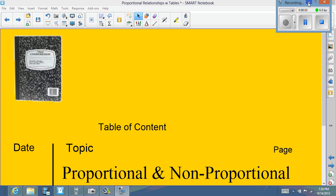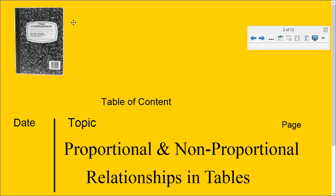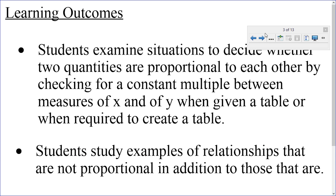Welcome back, ladies and gentlemen. This is Dr. Daniel D. Robinson, and today we're going to continue our conversation. This time it's about proportional and non-proportional relationships in tables. Our lesson outcomes we hope to achieve is for students to examine situations to decide whether two quantities are proportional to each other by checking for a constant multiple between measures of X and Y when given a table or when required to create a table. Students study examples of relationships that are not proportional in addition to those that are.